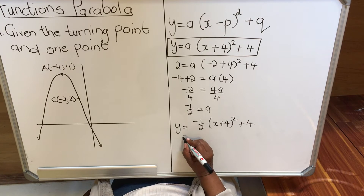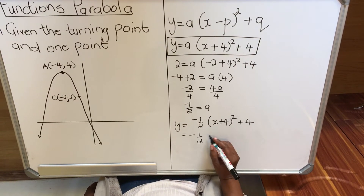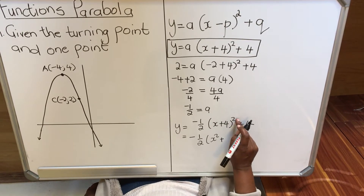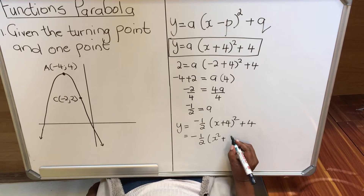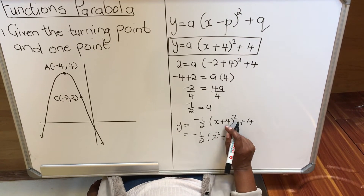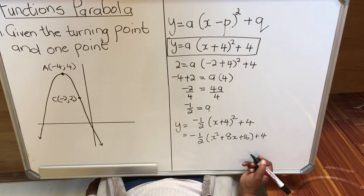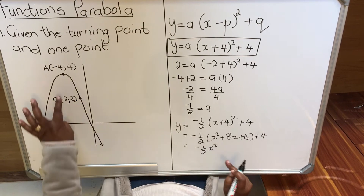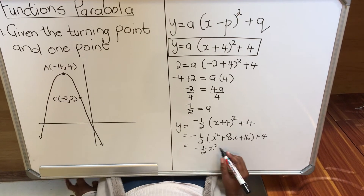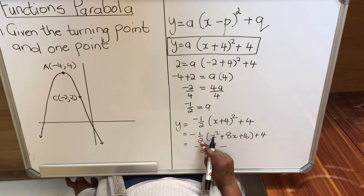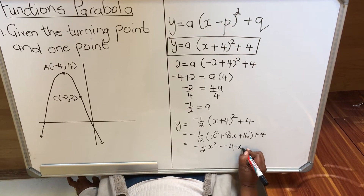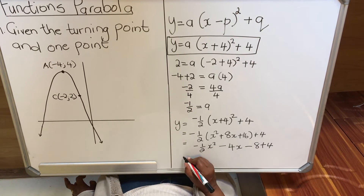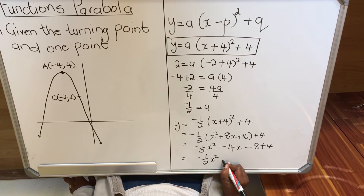If the question says write it in standard form, you have to multiply it out. So y = ½ times (x + 4)², which expands. Multiplying out the bracket: x times x is x², x times 4 twice gives 8x, and 4 times 4 is 16, plus 4. Then multiply through by ½: giving -½x² minus 4x plus 8 plus 4.